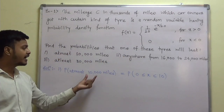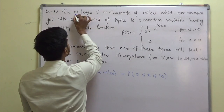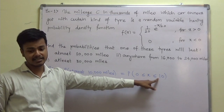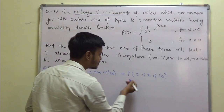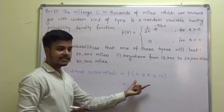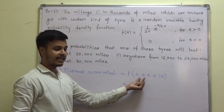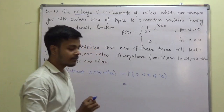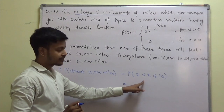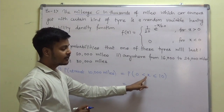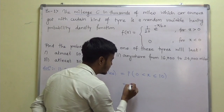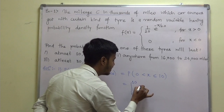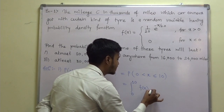Now, why am I not writing 10,000? Because mileage C is given in thousands, that is why I am writing 10 here. Now, solving this — we have already seen what probability of a ≤ x ≤ b is. So probability of 0 ≤ x ≤ 10 should be the integration from 0 to 10 of f(x) dx.